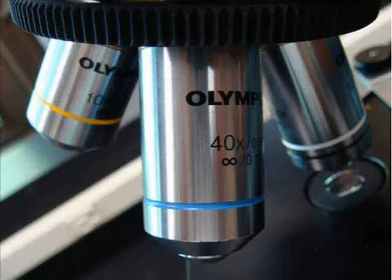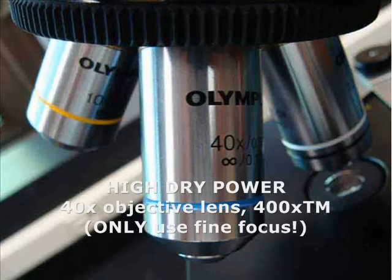Once the specimen is clearly in focus at low power, that yellow banded lens, I can switch the objective to the high dry power. That's the blue banded lens, and it will magnify my specimen a total of 400 times actual size.